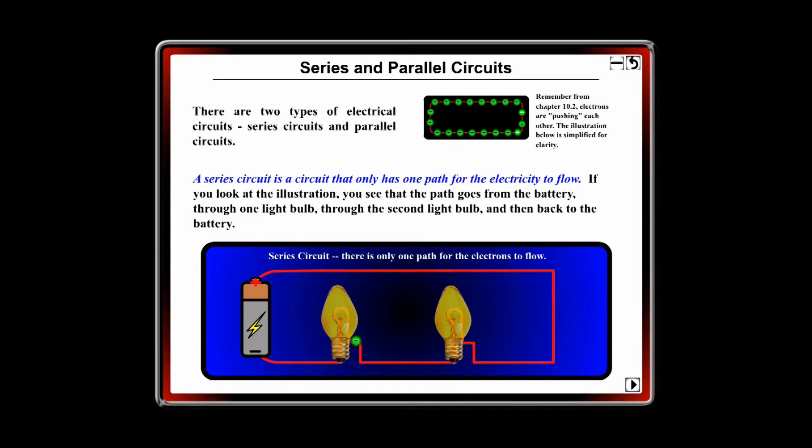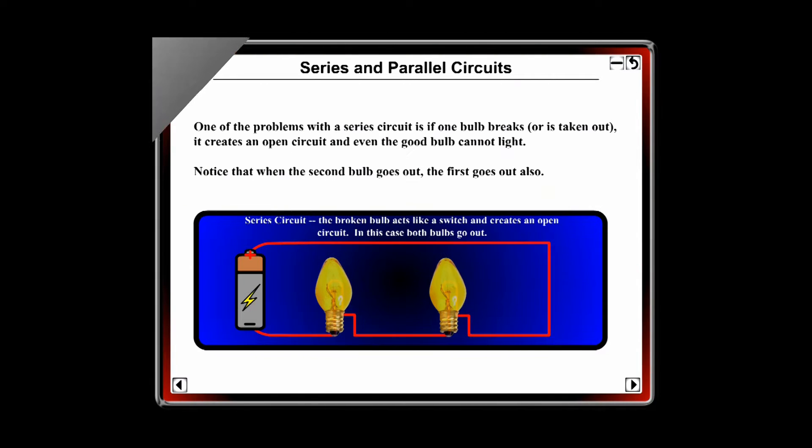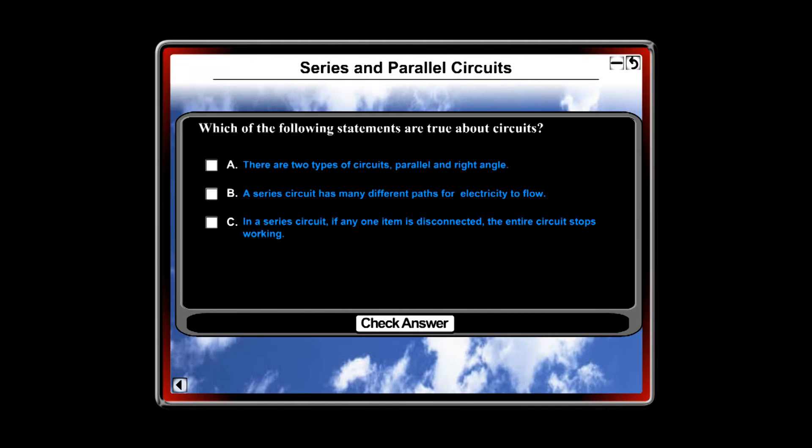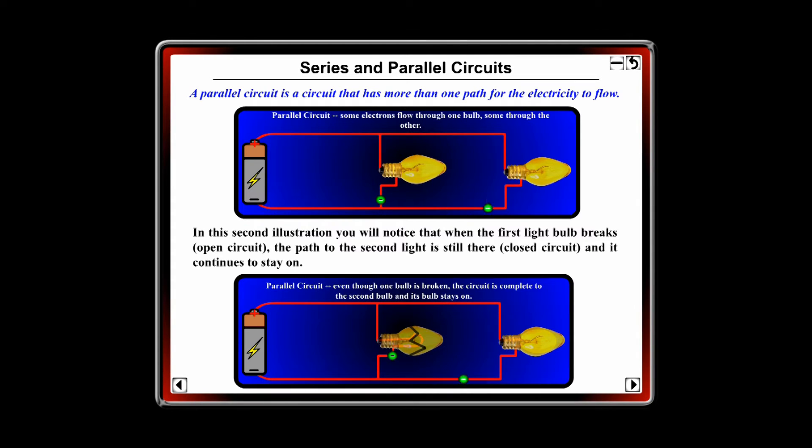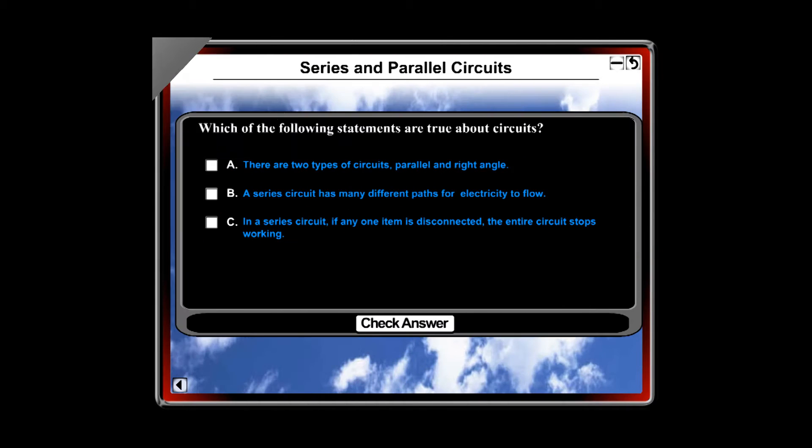This lesson is from our electricity unit and is a good example of a typical foundational lesson. The first page introduces students to what a series circuit is. The next page shows how in a series circuit, if one bulb goes out, the entire circuit goes out. Students answer multiple choice questions as they go through each lesson. Next, the student learns about parallel circuits and how even if one bulb goes out, the other can stay on because there is a second path for the electricity. Again, they would answer a question.